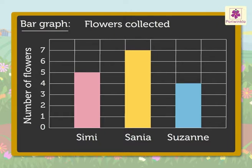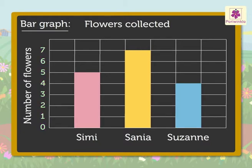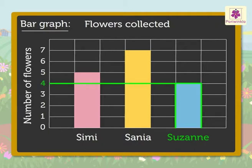Now let's see how we can read this bar graph of the flower farm example. The title 'Flowers Collected' tells us the bar graph is about the number of flowers collected. The labels give us the information about who collected the flowers and how many. The scale tells us how many flowers were collected. Hence from the bar graph we can say Simi collected five flowers, Sanya collected seven flowers, and Suzanne collected four flowers.